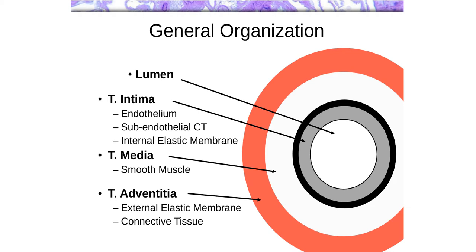In this diagram, what you have is the lumen. The nearest layer to the lumen is called the tunica intima, which is composed of three layers. The innermost layer is the endothelium, which is a simple squamous epithelium. Underneath that epithelium is a little bit of connective tissue called the subendothelial connective tissue. It is a relatively loose tissue and usually doesn't show up as a very significant portion of the size of that wall.